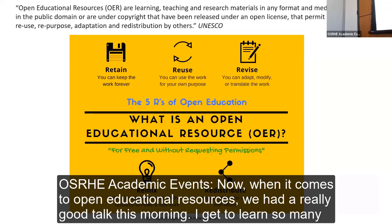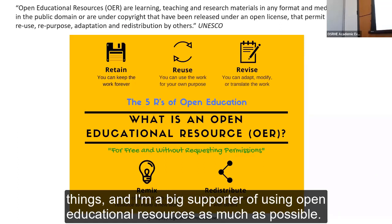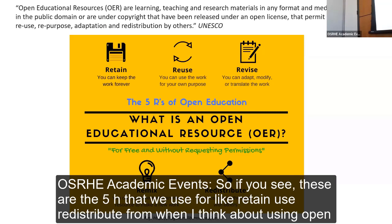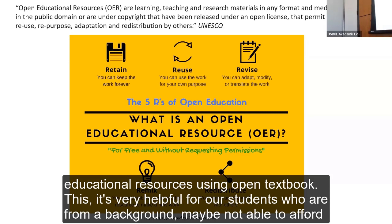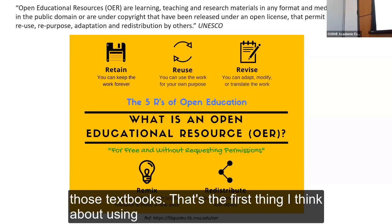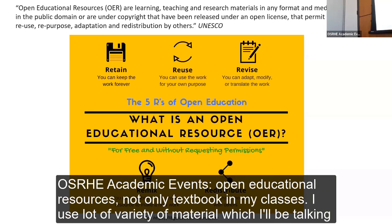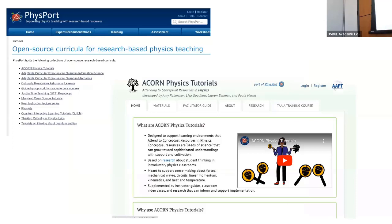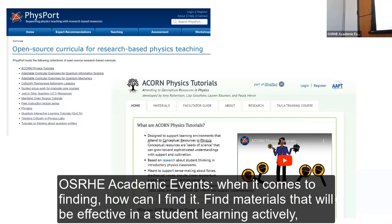When it comes to open educational resources, I'm a big supporter of using them as much as possible. These are the five R's: retain, reuse, revise, reuse, and redistribute. Using open textbooks is very helpful for students who may not be able to afford traditional texts. In my classes I use a wide variety of OER materials, not just textbooks — most of which I'll be talking about.